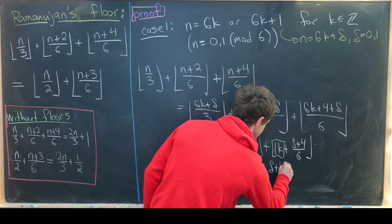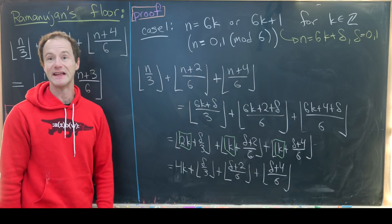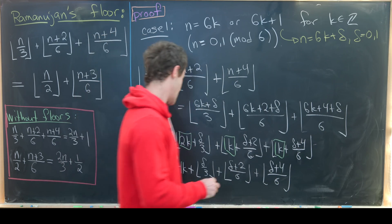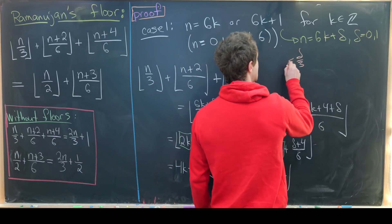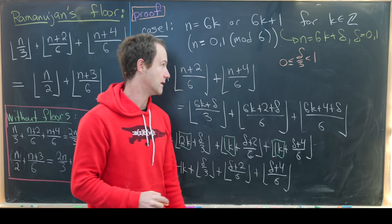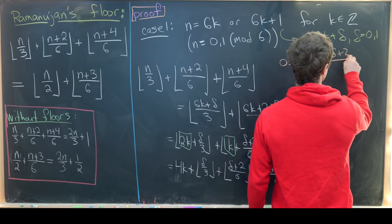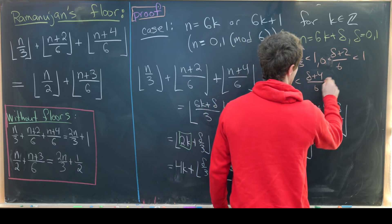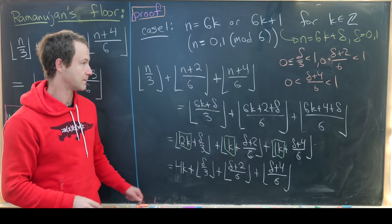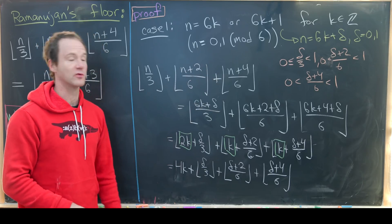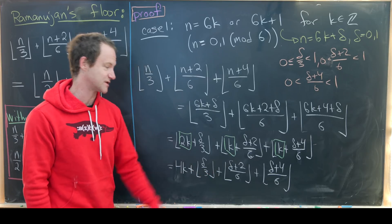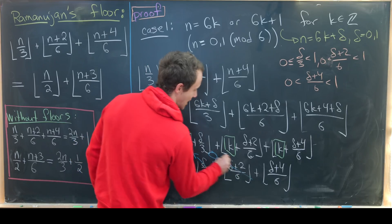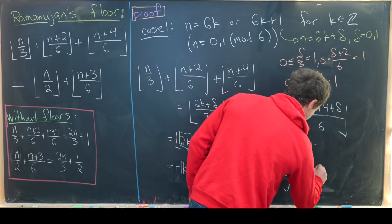We're left with 4k plus the floor of δ/3 plus the floor of (δ+2)/6 plus the floor of (δ+4)/6. Since δ = 0 or 1, each of these fractions is strictly between 0 and 1 — we can never get a numerator of 6. So each floor equals 0, giving us simply 4k for the left-hand side in Case 1.